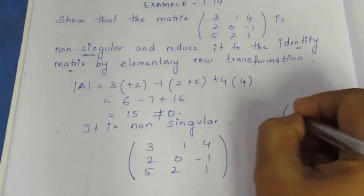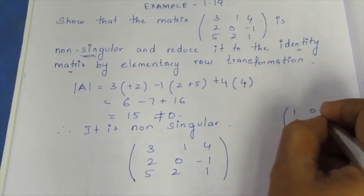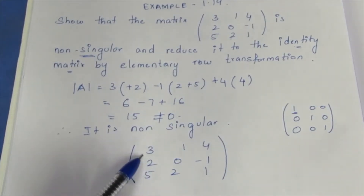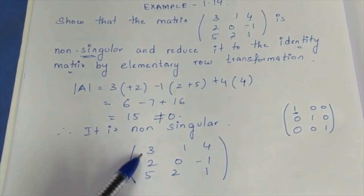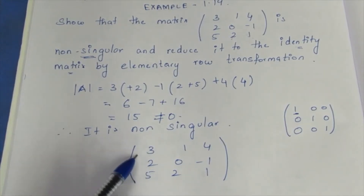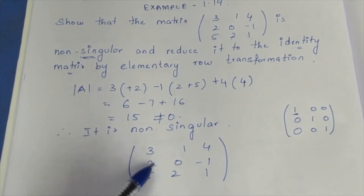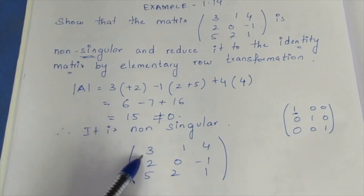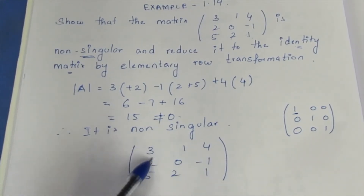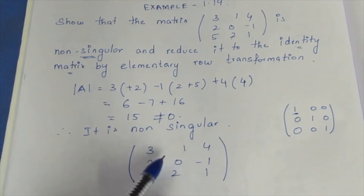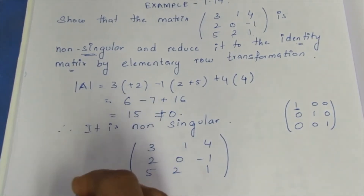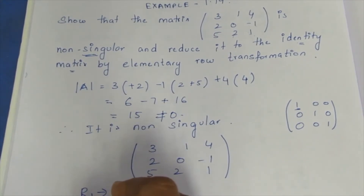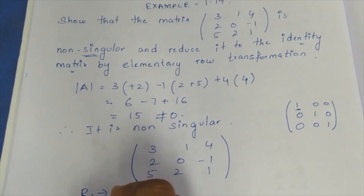The identity matrix is written as: 1, 0, 0 in the first row; 0, 1, 0 in the second row; and 0, 0, 1 in the third row. This is the 3×3 identity matrix we are aiming to reach.